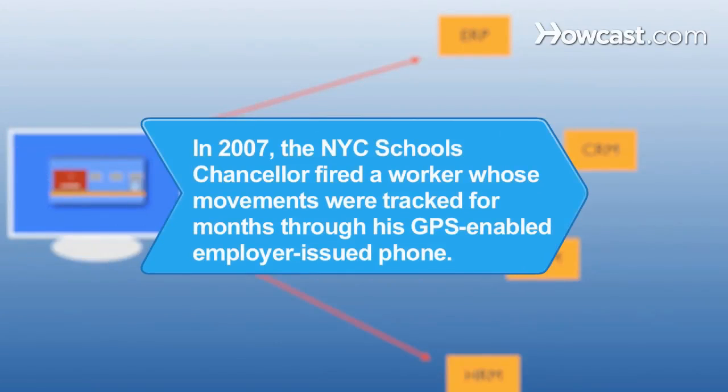Did you know? In 2007, the New York City Schools Chancellor fired a worker whose movements were tracked for months through his GPS-enabled, employer-issued phone.